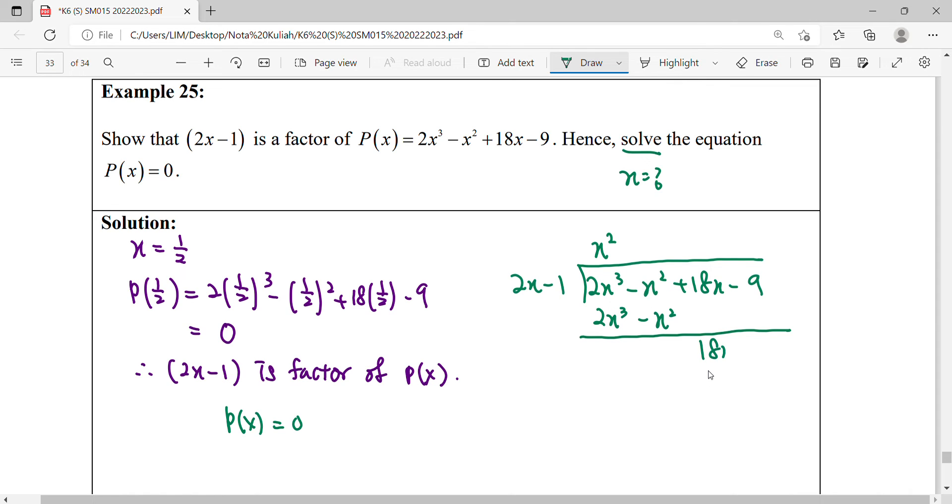This division will still continue because this is linear and can still be divided. So 18 divided by 2.